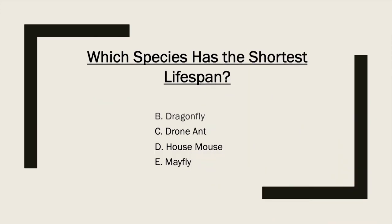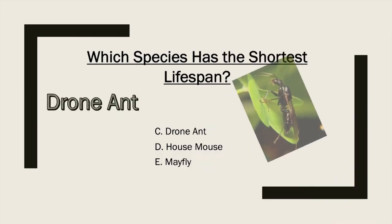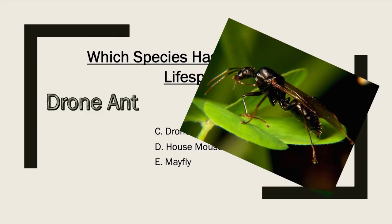Up next, drone ants. Drone ants are the male members of an ant colony. Leafcutter ants can lift 50 times their body weight — so if you're a 100-pound person, you could carry a rhinoceros or a small car. Though strong, drone ants only have a life cycle of three weeks, and it's the females that establish the ant colonies. Drone ants are primarily for continuing the species, and once they've mated, they pretty much die. Crazy story, but not the shortest lifespan.